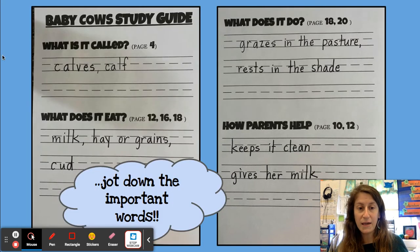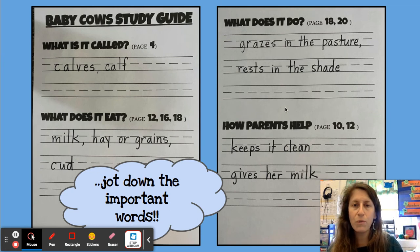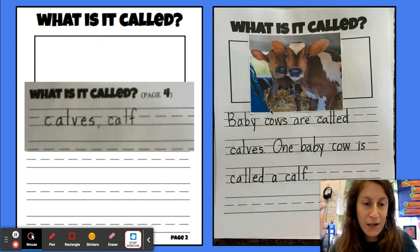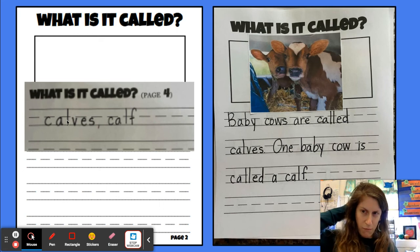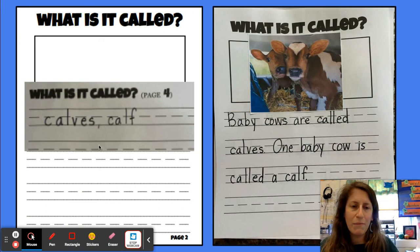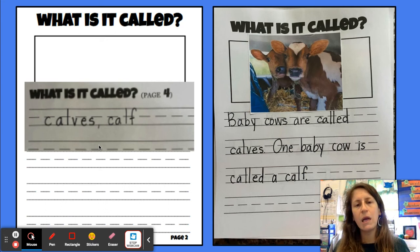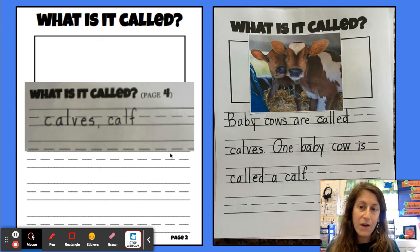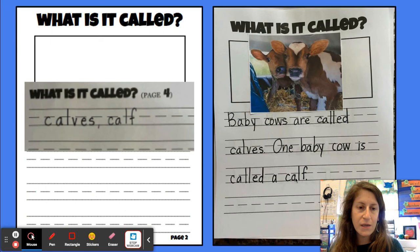This is what my completed study guide looks like — I went and looked at all these pages and just put the important words. Now, how did I use the study guide to write my book? For 'what is it called,' when I went to fill out my book, I didn't just write 'calves' and 'calf.' I have to write it in full sentences. So I wrote: 'Baby cows are called calves. One baby cow is called a calf.'